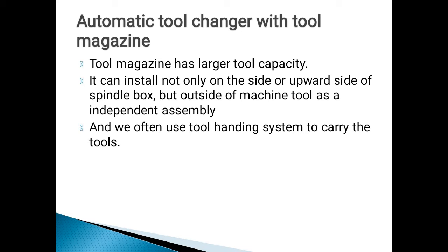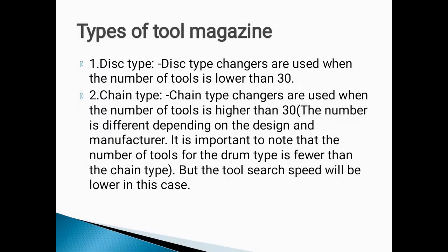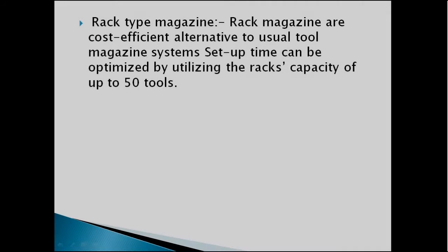The Tool Magazine has larger tool capacity. It can be installed not only on the side or upper side of the spindle box but also outside of the machine as an independent assembly. We often use a Tool Handling System to carry the tools. There are three types of Tool Magazines: Disk Type, Chain Type, and Rack Type. Disk Type changers are used when the number of tools is lower than 30. Chain Type changers are used when the number of tools is higher than 30 — it can carry more tools but is comparatively slower than Disk Type. The Rack Type Tool Changer can carry a huge number of tools but is slower than both Chain Type and Disk Type.